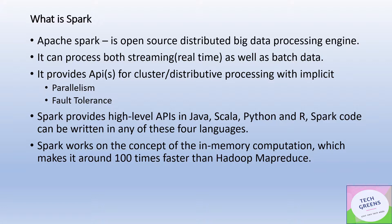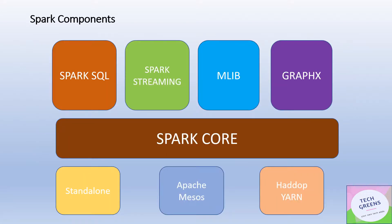Spark works on the concept of in-memory computation, which makes it around 100 times faster than Hadoop MapReduce. So all in all, Spark is a big data processing engine which works on the concept of in-memory computation and is lightning fast.